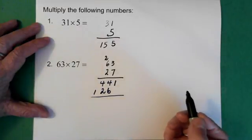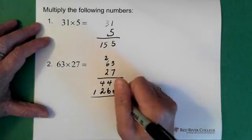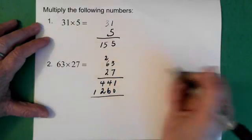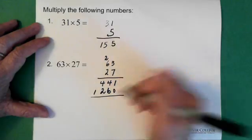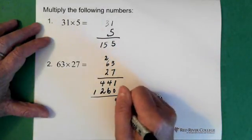So the 2 times the 6 gives us 12, and the 12 goes here. Now what we do is draw a line and we add our numbers up. So essentially we have a 0 here which we don't really see, but we do see it if we pencil it in.